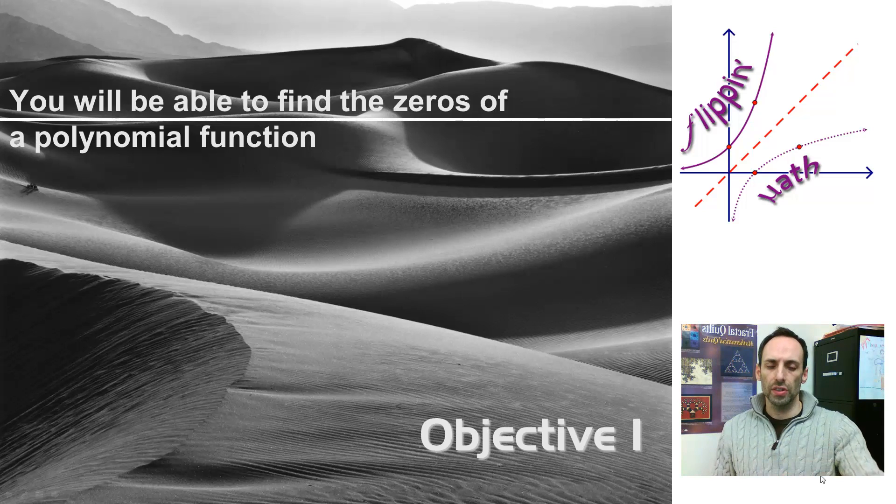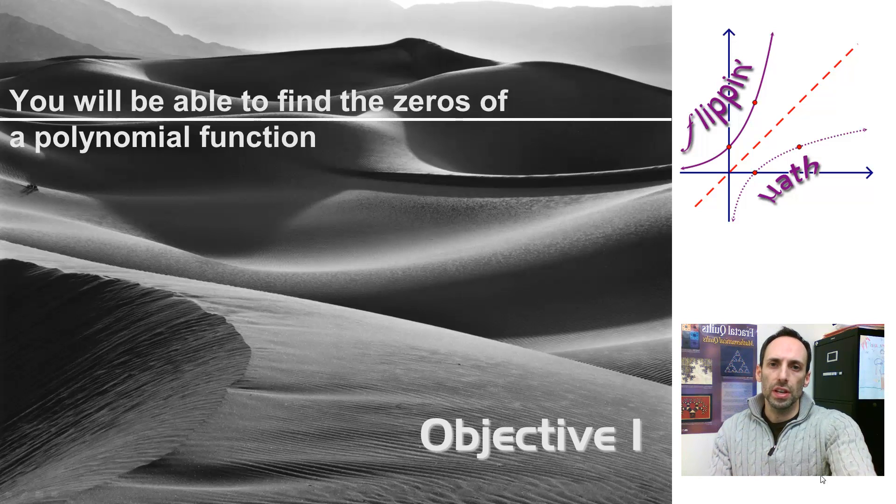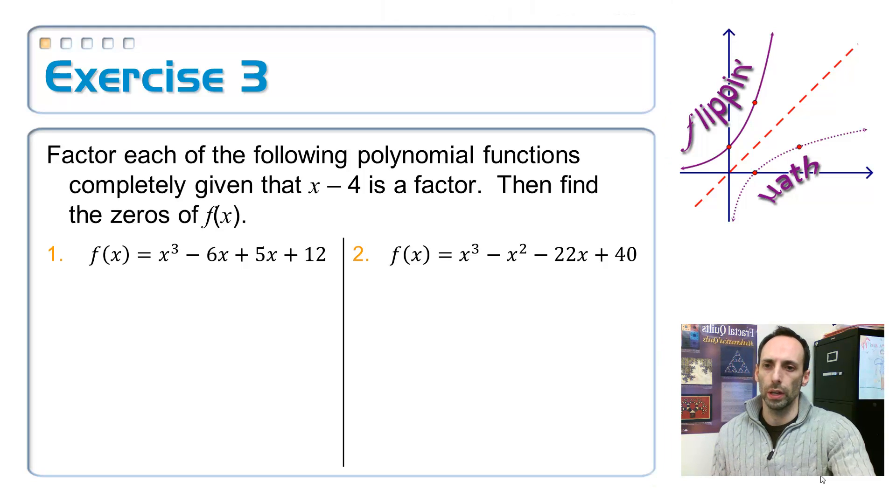All right, so let's do some exercises with this objective, being able to find zeros of a polynomial function. In each of these cases, we're assuming that we already have one of the zeros, and what we're going to do is divide that out by synthetic division and factor everything else that's left over.